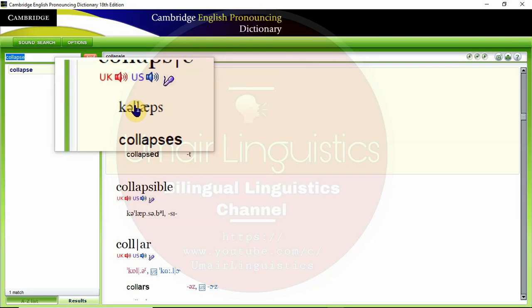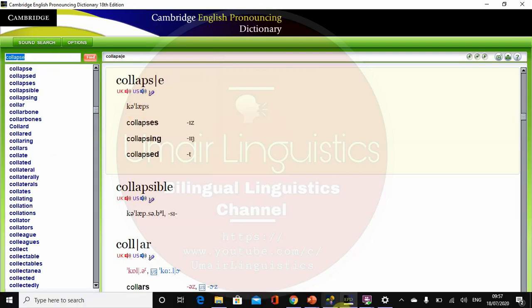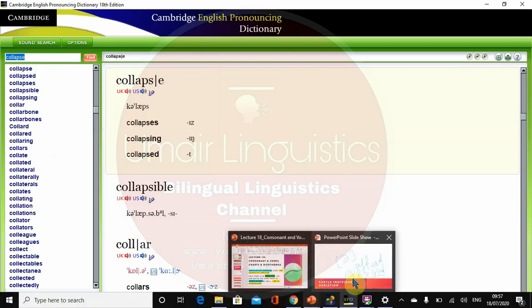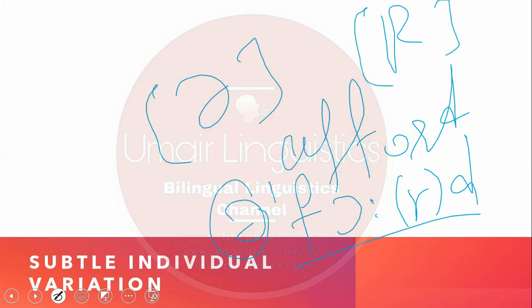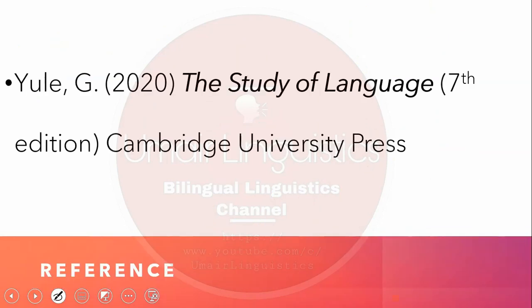So I hope you have understood this lecture. There are some other variations as well, like the vowel sound in the French word 'rouge', and there are some other vowels as well. This is all about today's lecture. Don't forget to give your feedback, remember us in your prayers, and thank you.